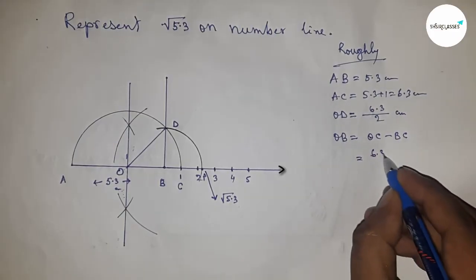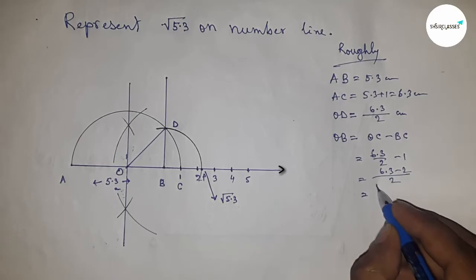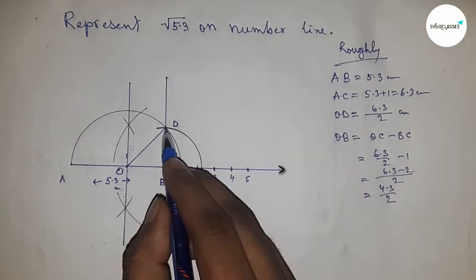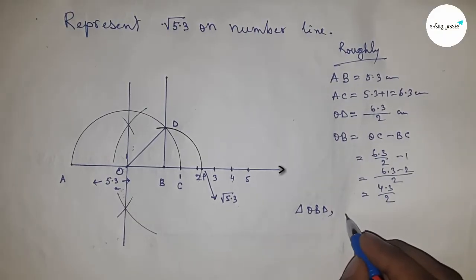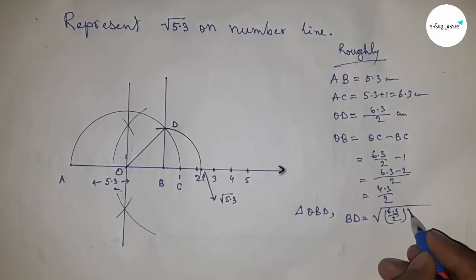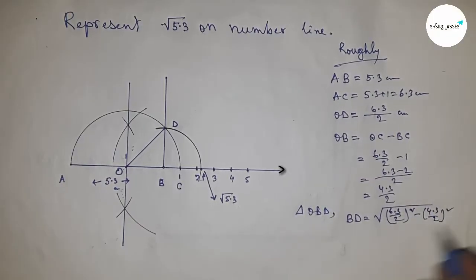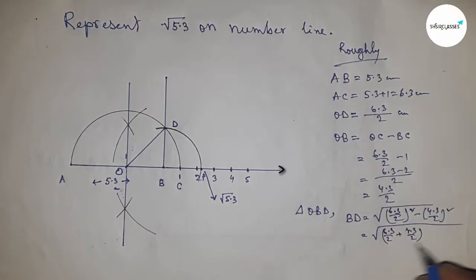After calculating, 4.3 by 2. Next, having to find the length BD, so by triangle OBD, using Pythagorean theorem: hypotenuse squared minus base squared. Applying the formula a squared minus b squared equals a plus b times a minus b.